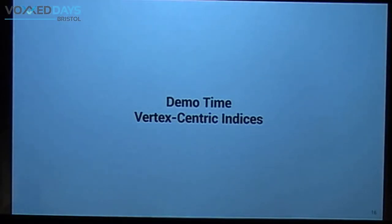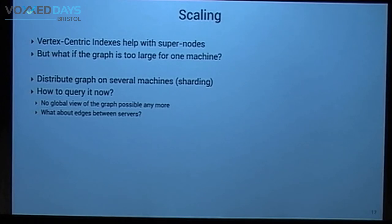But this is still running on a single machine. Now let's talk about scaling. Vertex-centric indices help with super nodes, including in a distributed environment. But what if my graph is too large to fit on a single machine? Then I have to distribute it across several machines — a mechanism called sharding, chopping the dataset into shards on different machines. The questions become: how to query it, how to get a global overview, and what about edges linking vertices on different servers?